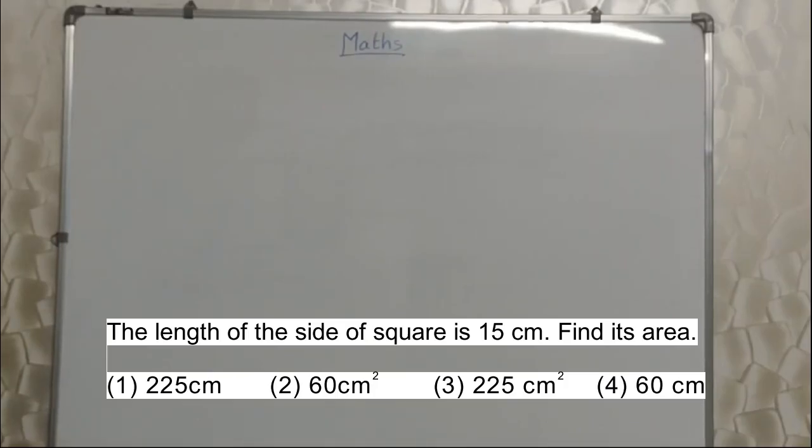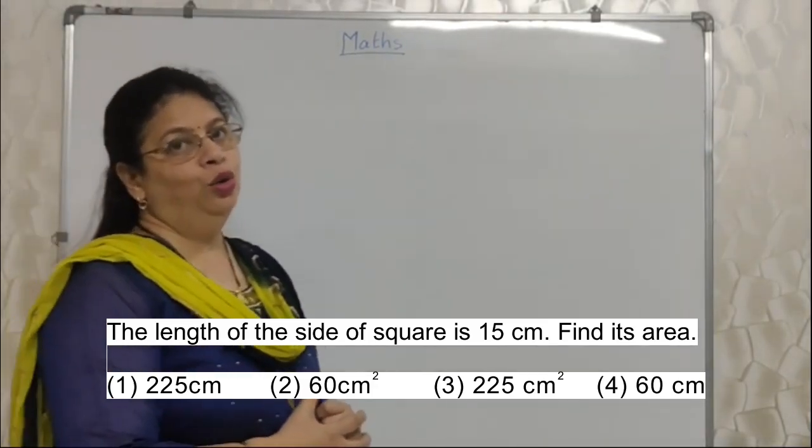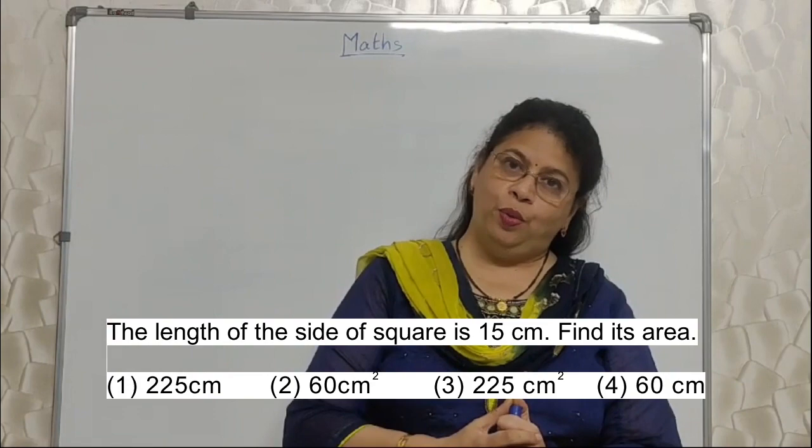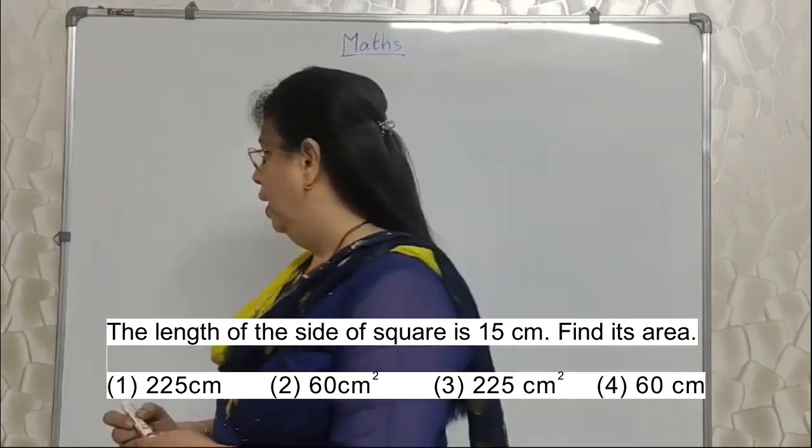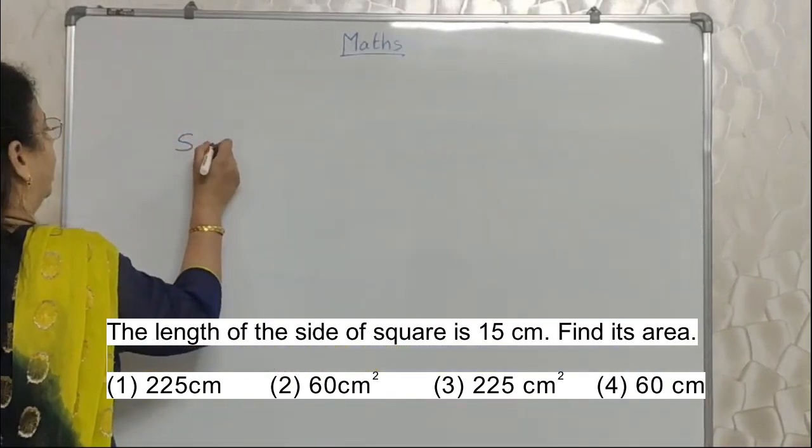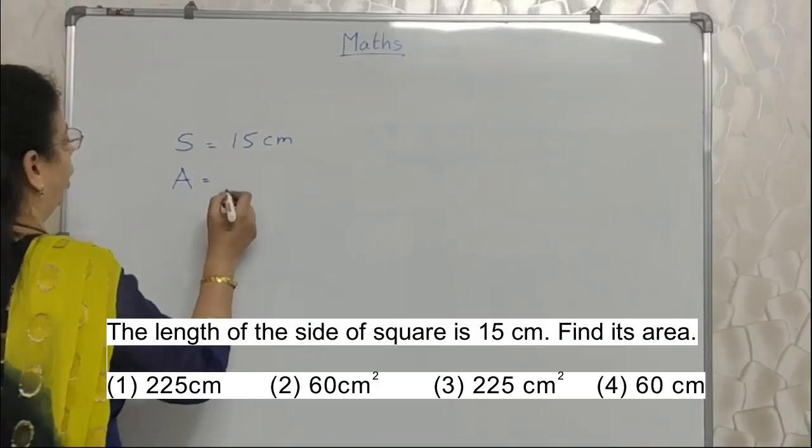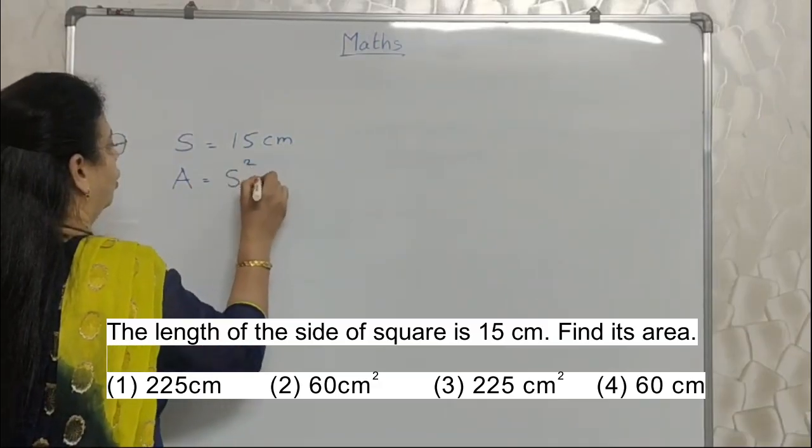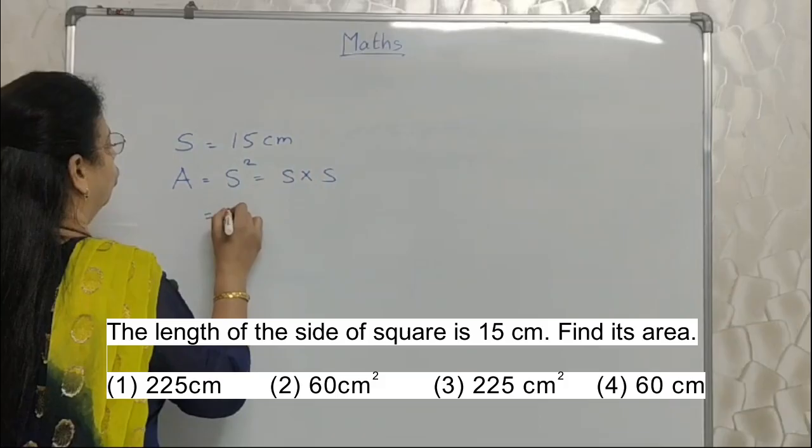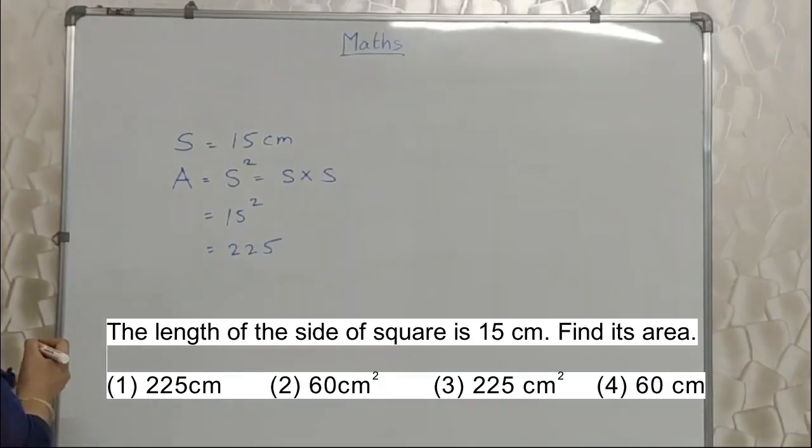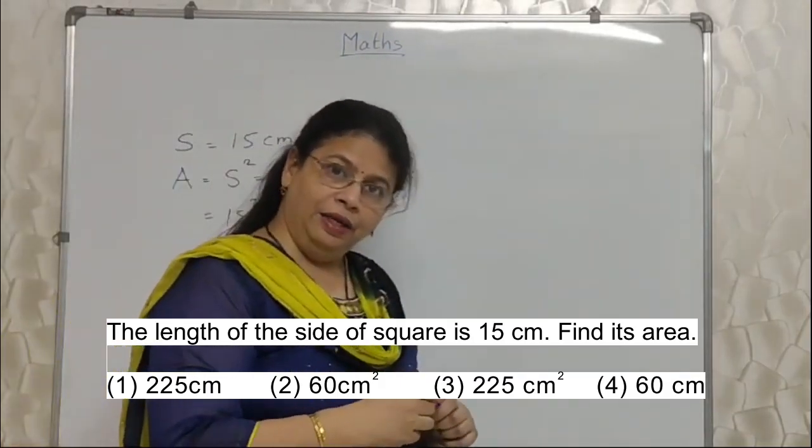Students, read the next sum properly. The length of the side of square is 15 cm. Find its area. I know this sum is very simple. It is based on formula. What is the area of square? Side square is the area of the square. Right? Now they have given here side as 15 cm. We need to find out the area. What is the formula? Side square or S into S. Right? So 15 square, which is 225. Right? I have deliberately taken this sum here.